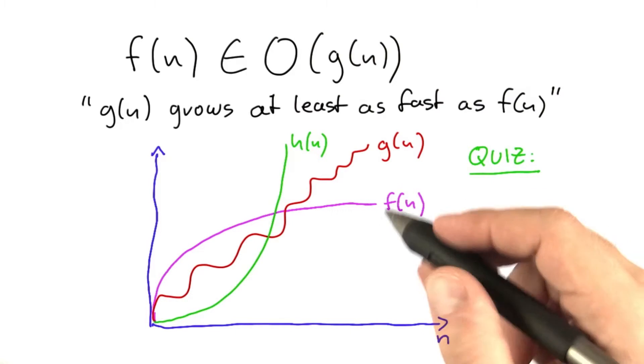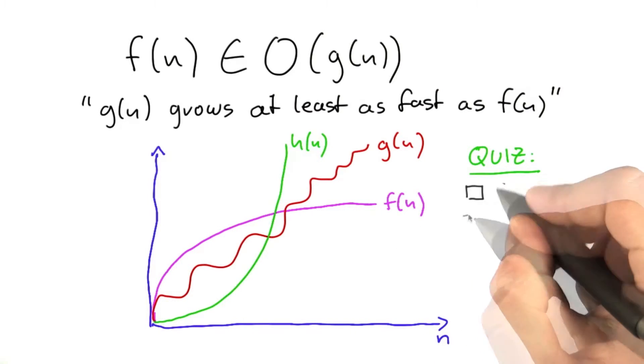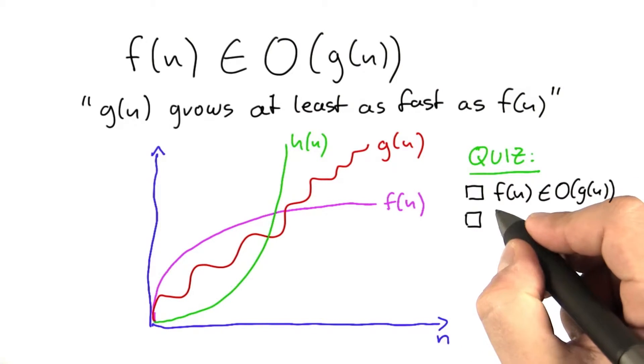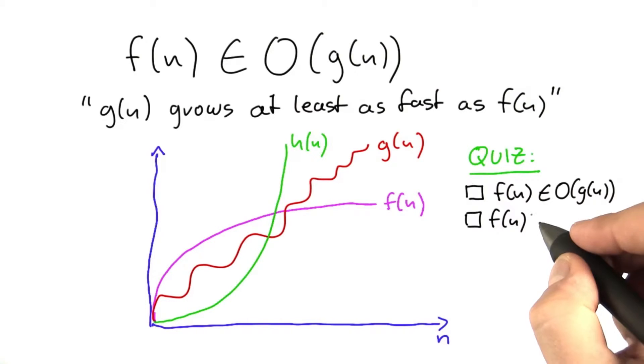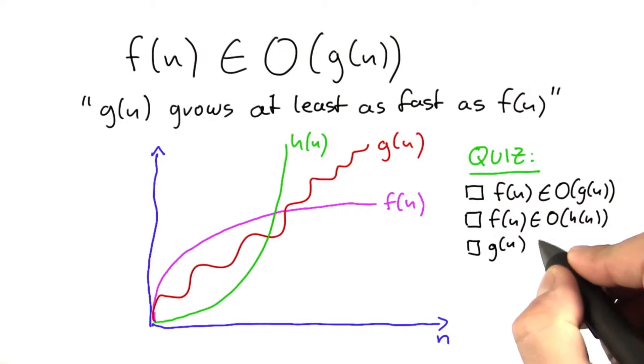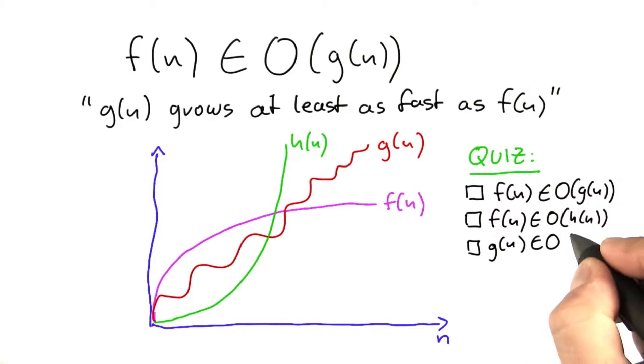What I would like you to tell me now is which of the following statements is true. Is f(n) contained in O(g(n))? Is f(n) contained in O(h(n))? Is g(n) contained in O(f(n))?